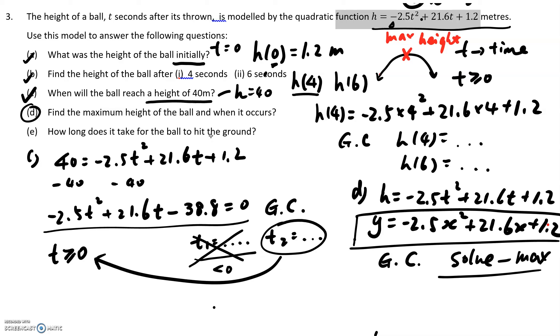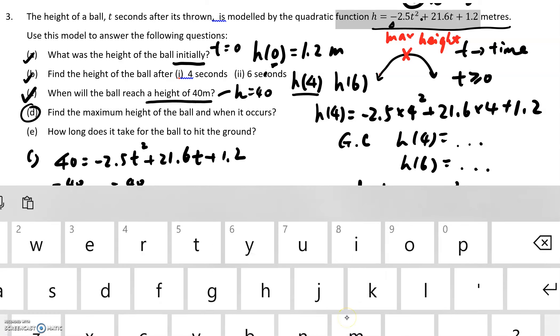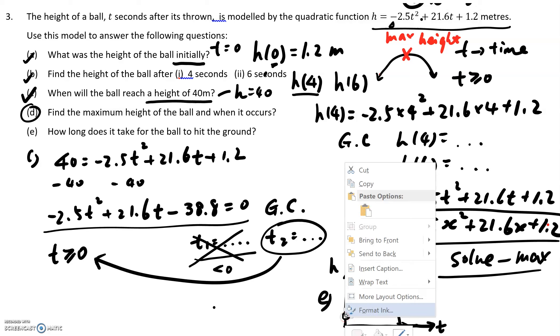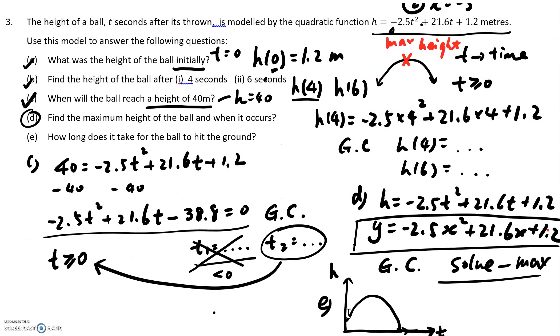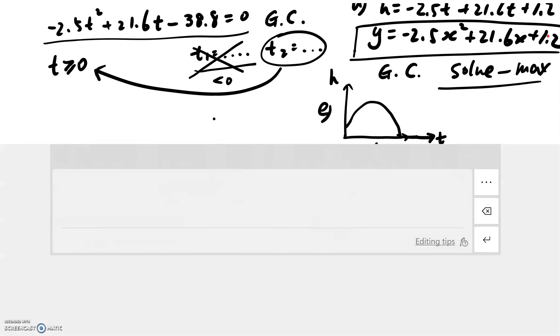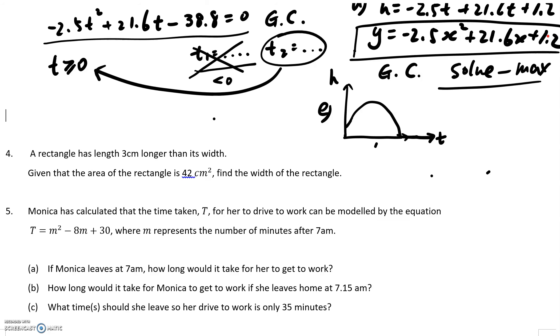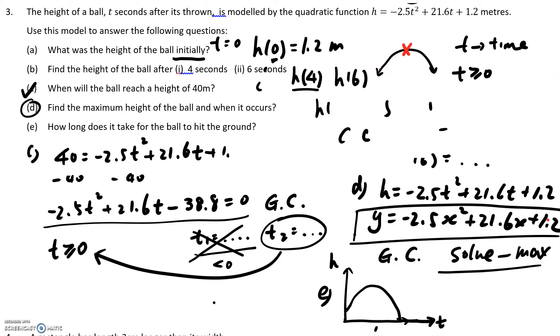So what you then need to do is you could also use your graphic calculator and calculate from the beginning. So the graph might look like that. So basically, that's a graph. So that's h, that's your t. So basically, the graph looks like that and we know that the y-intercept is actually 1.2 because when t equals 0.